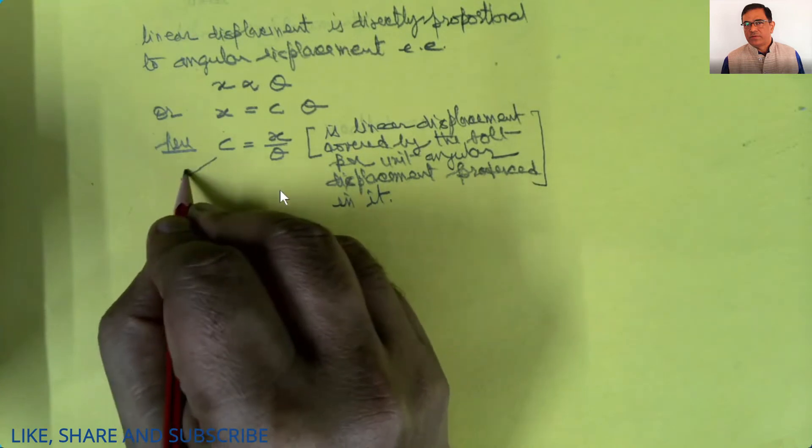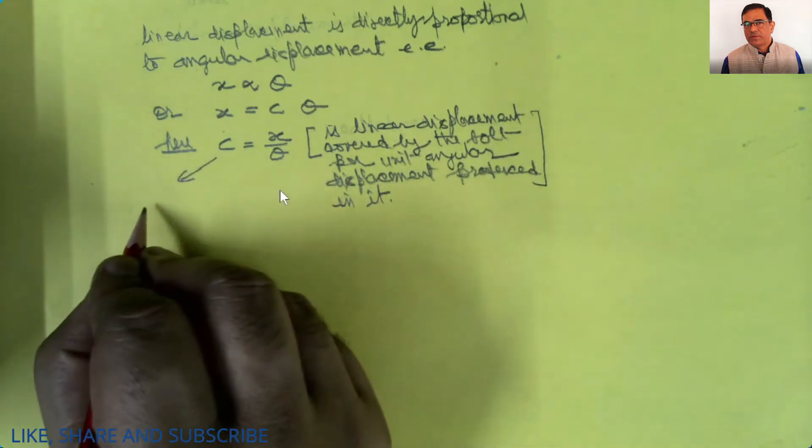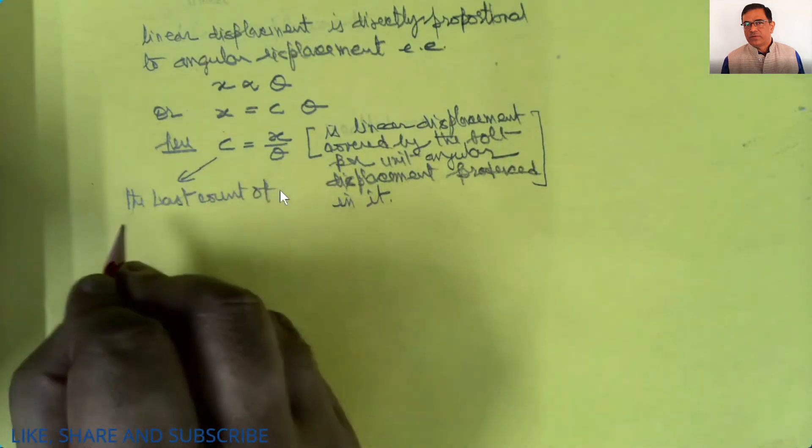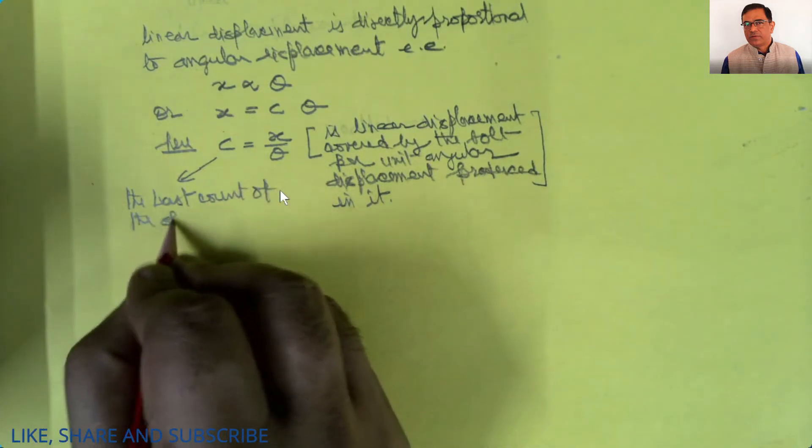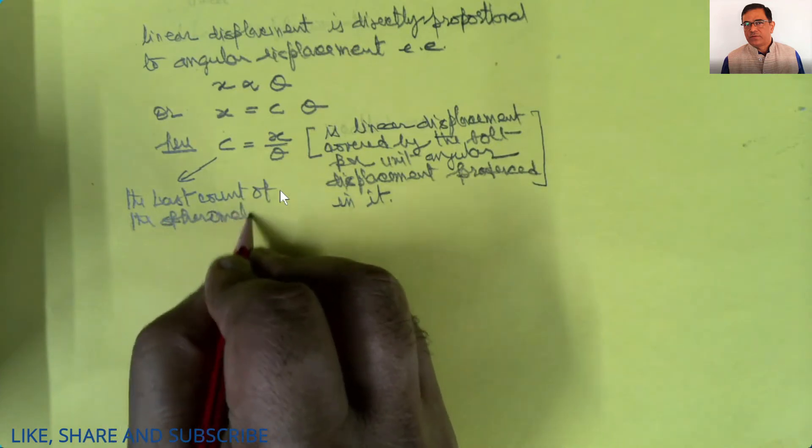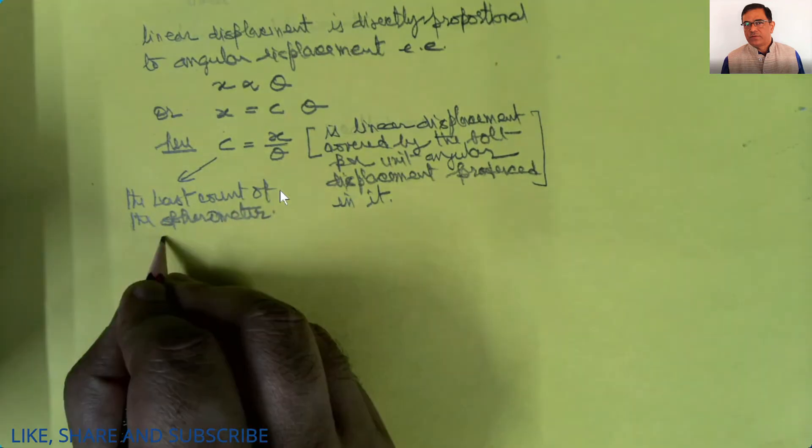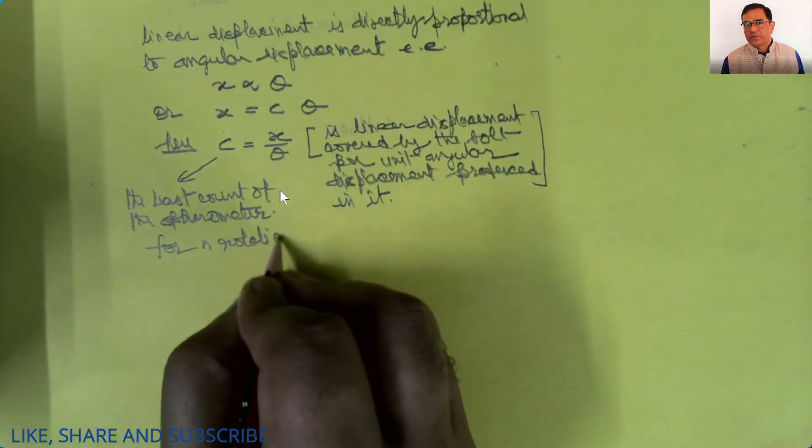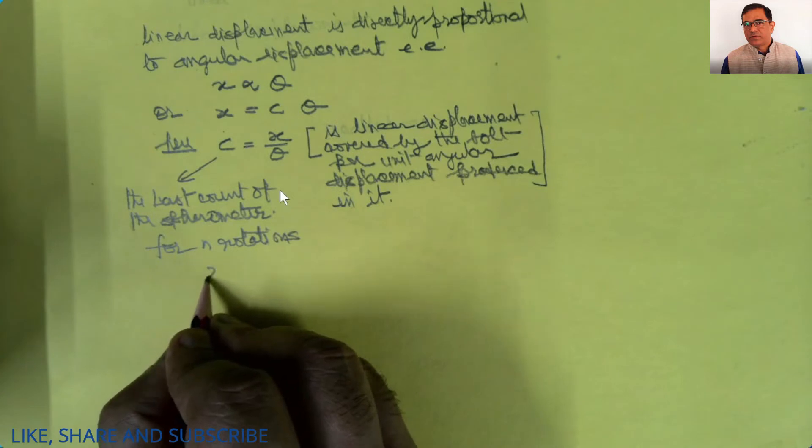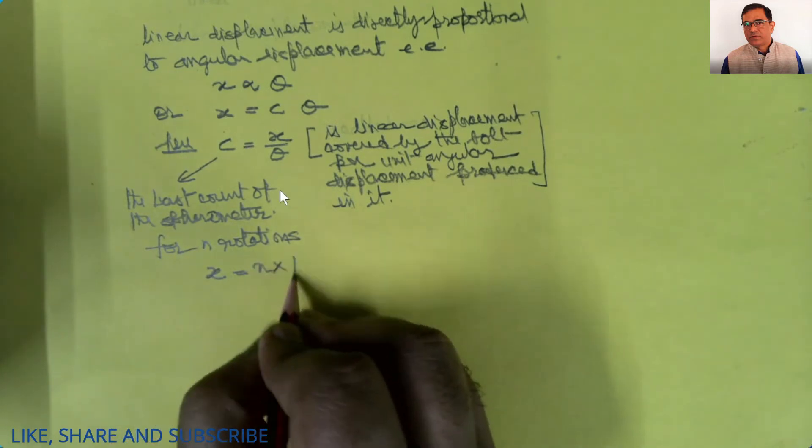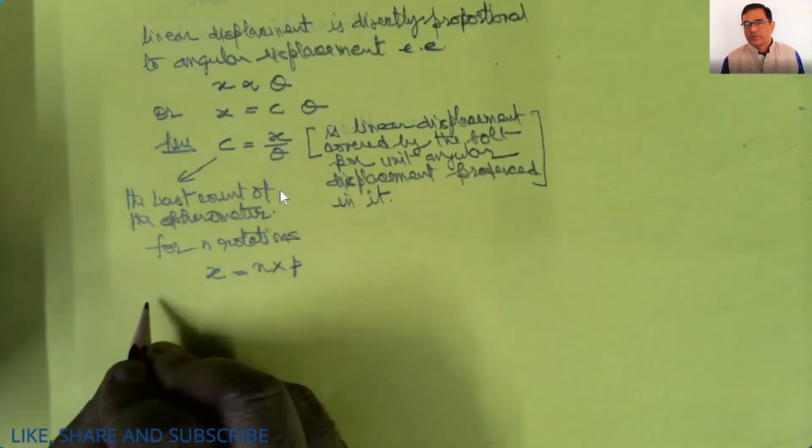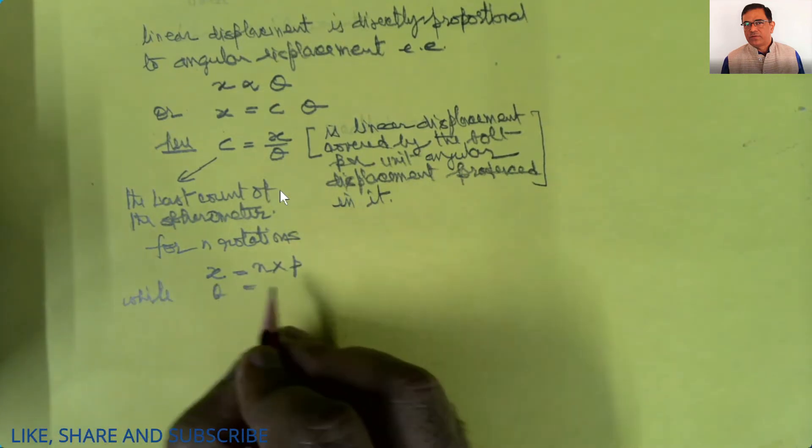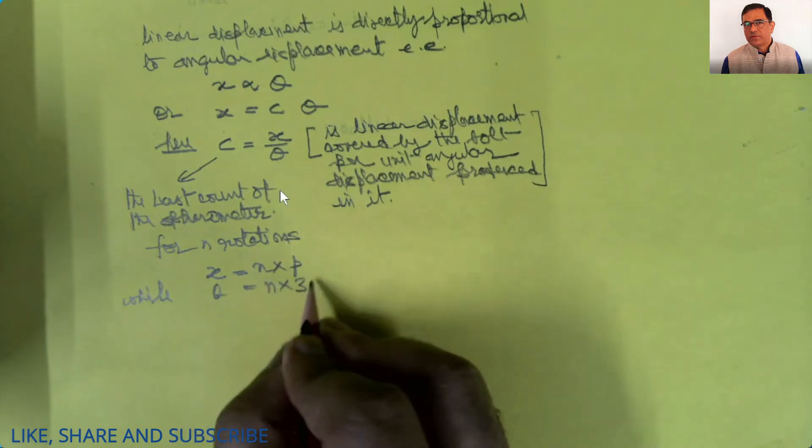This proportionality constant also happens to be the least count of the spherometer. For n rotations, x equals n times pitch, while θ equals n times 360 degrees.